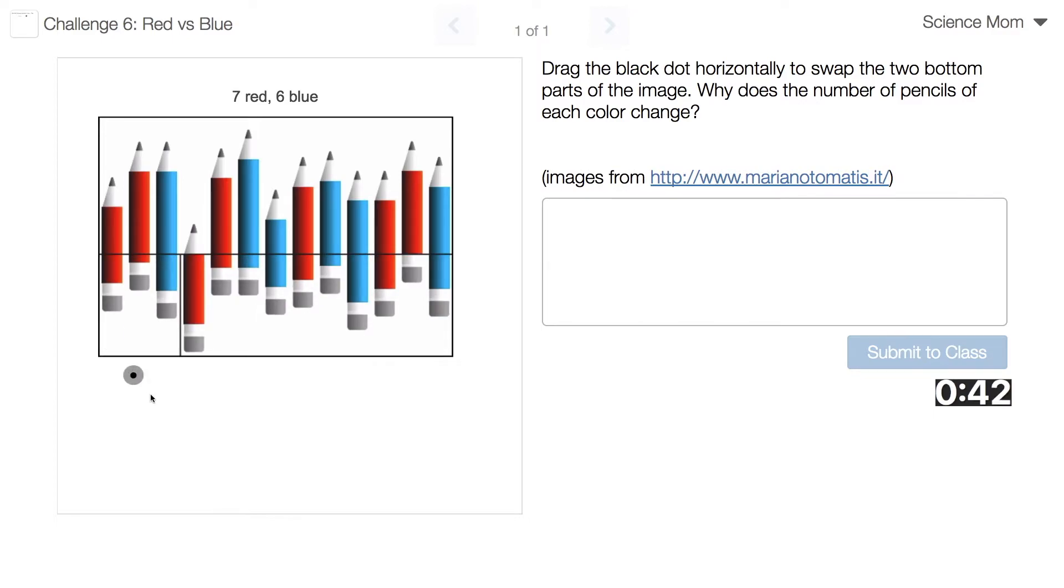Now how many reds do you count? One, two, three, four, five, six. The bottom pencil with the eraser is the only part that counts. One, two, three, four, five, six. Yeah. So on top there's only six. Something weird's going on here. One, two, three, four, five, six. There are only six red pencils.